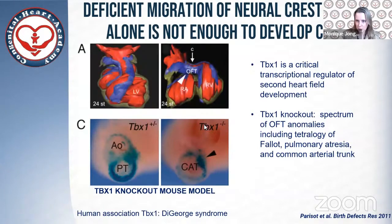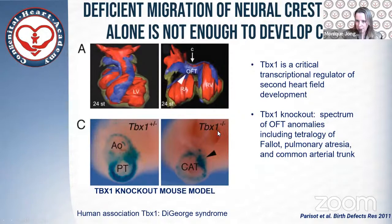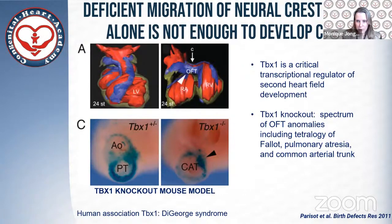A nice example is shown here — a mouse model where the transcription factor TBX1, which is the major candidate gene for DiGeorge syndrome, was deleted, resulting in common arterial trunk. You can nicely see the separated outflow tract in a wild type and a common arterial trunk in a TBX1-deficient mouse. TBX1 has been shown to be a critical transcriptional regulator of second heart field development, and likely there are signaling pathways between the neural crest and the second heart field.